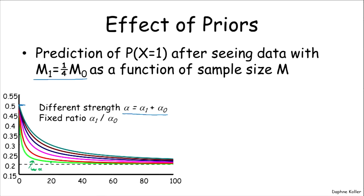On the other hand, this bluish line over here, we can see that the alpha is high. And that means it takes more time for the data to pull us to the empirical fraction of heads versus tails.